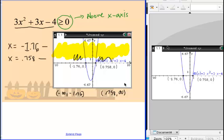These endpoints are included, so we could use brackets if we wanted to. The other way that we would write it, which is the way that you're probably going to be most comfortable with, is that x has to be less than or equal to negative 1.76 and x is greater than or equal to 0.758. So this is your answer. It's really not that bad. We're just looking where is this graph above or where is it below the x-axis?